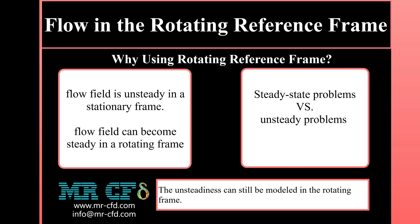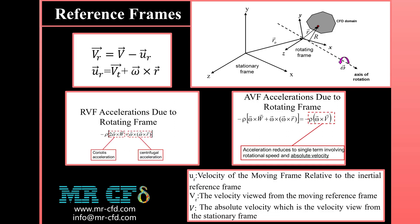Steady state problems are easier to solve than unsteady problems. It should also be mentioned that due to turbulent separation and non-uniform variations in flow, unsteadiness can still be seen in the rotating frame. When the equations of motion are solved in a rotating frame of reference, the acceleration of the fluid is augmented by additional terms in the momentum equations. Fluent allows you to solve rotating frame problems using either the absolute velocity or the relative velocity as the dependent variable.